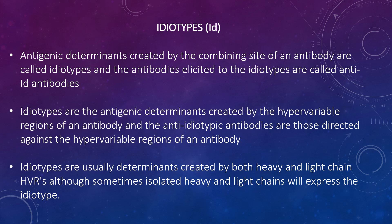Looking at idiotypes: these are unique antigenic determinants present on an individual antibody molecule and on molecules of identical specificity, meaning all antibody molecules with the exact same hypervariable regions. Antigenic determinants created by the combining site of antibodies are called idiotypes, and antibodies elicited against idiotypes are called anti-idiotype antibodies. Idiotypes are localised on the Fab fragment of the immunoglobulin molecule — specifically at or near the hypervariable regions of the heavy and light chains. In many instances, the idiotype may include some framework residues near the hypervariable region. Idiotypes are typically determined by both the heavy and light chain HVRs, although some isolated heavy or light chains can expose the idiotype.